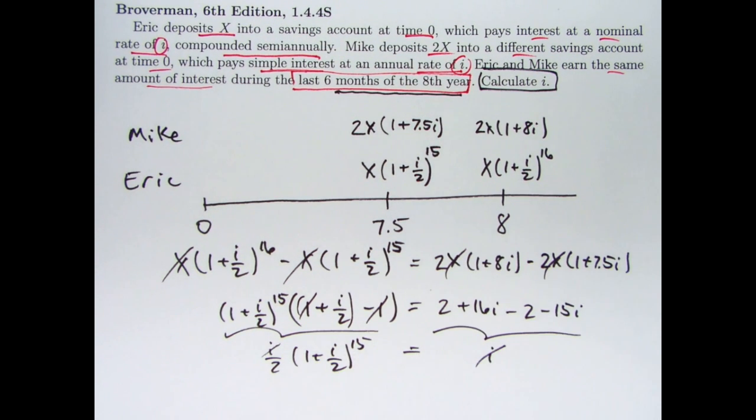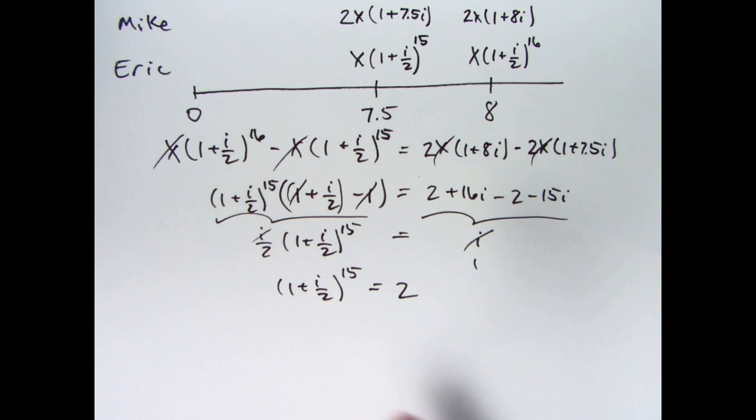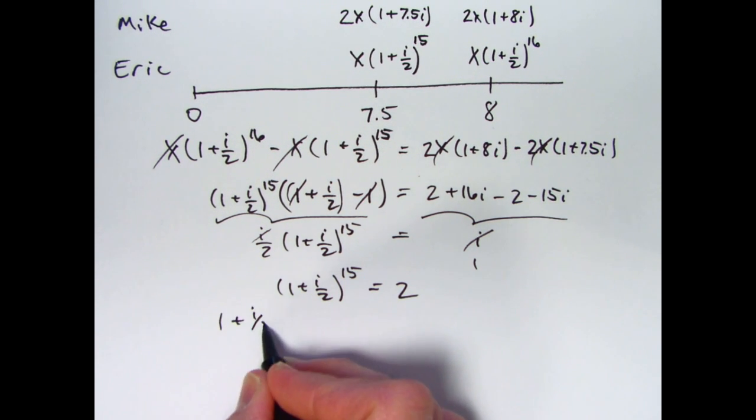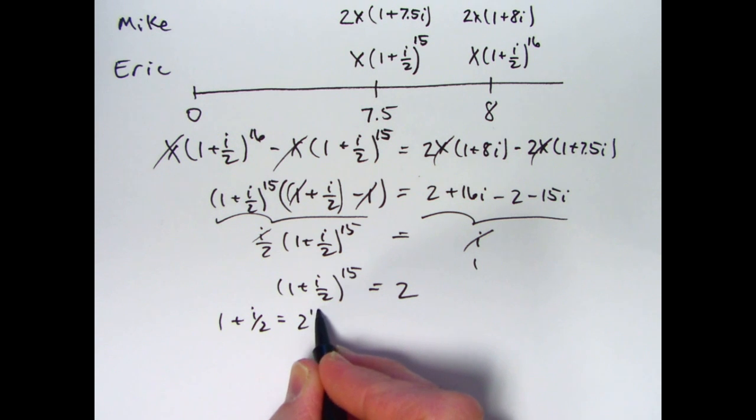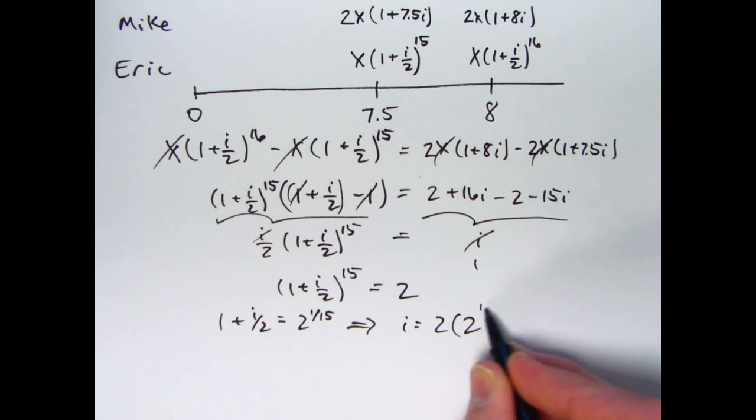i is a non-zero number. It can be canceled on both sides. You can multiply both sides by 2. We need to solve the equation: 1 plus i over 2 to the 15th power equals 2. Raise both sides to the 1/15th power. 1 plus i over 2 will be 2 to the 1/15th. Subtract 1 and then multiply both sides by 2. i is going to be 2 times 2 to the 1/15th minus 1.